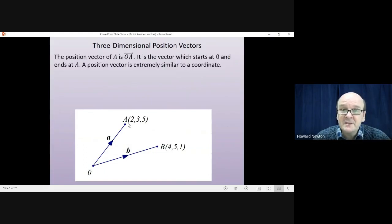The position vector of A is the vector from the origin to the point A, the vector which starts at O and ends at A. And position vectors are extremely similar to coordinates. They always have exactly the same numbers. Coordinate is written horizontally. A position vector is written vertically as a column vector. So A, 2, 3, 5 are the coordinates of a point in space.